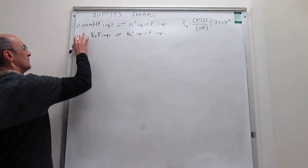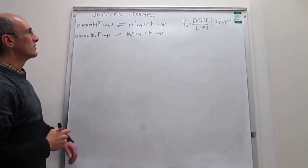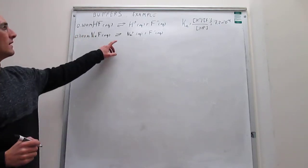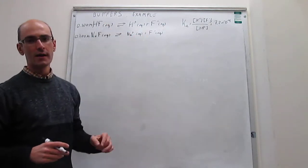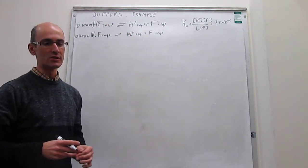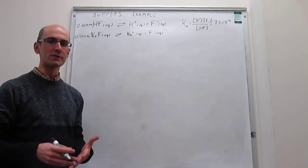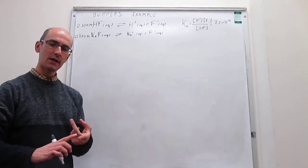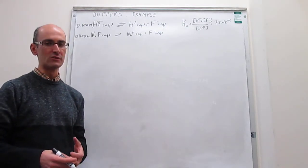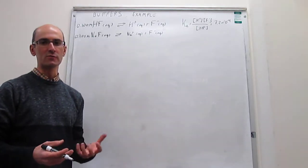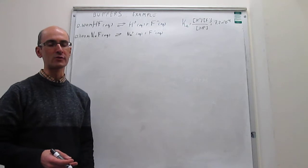Notice that at equilibrium, you're going to have the same amount of HF and fluoride, and those are going to be very similar to the initial concentrations — 0.1 molar. That is the definition of a buffer: you need a weak acid, the conjugate base of the acid, and both need to be in relatively large concentrations, which for us is 0.1 molar or higher.